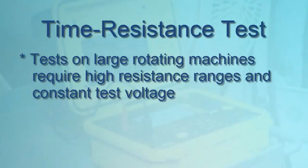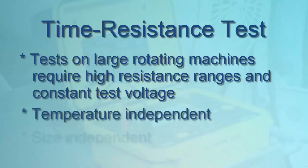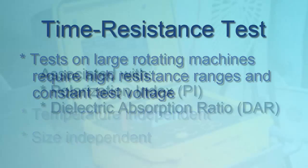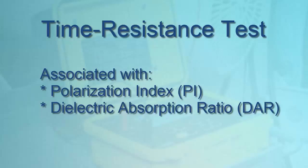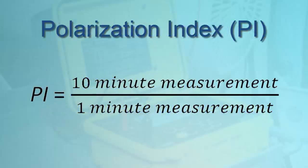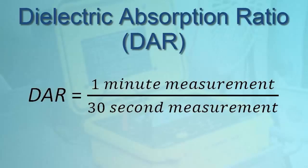Time resistance tests on large rotating electrical machinery, especially systems with high operating voltage, require high insulation resistance ranges and a very constant test voltage. Since this test provides meaningful results within a single 10-minute duration, it is relatively independent of temperature and also independent of the size of the system under test. The time resistance test is sometimes associated with two values: the polarization index, or PI, and the dielectric absorption ratio, or DAR. The PI is derived by dividing the 10-minute resistance measurement by the 1-minute measurement. The DAR is calculated by dividing the 1-minute measurement by the 30-second measurement. Although DAR is no longer commonly used with new insulation systems, it may still have applicability when testing older insulating materials.